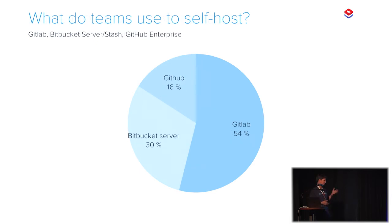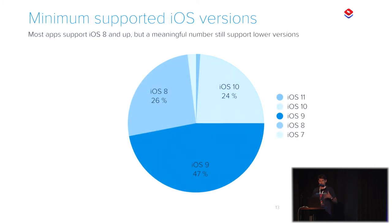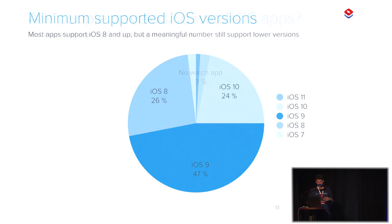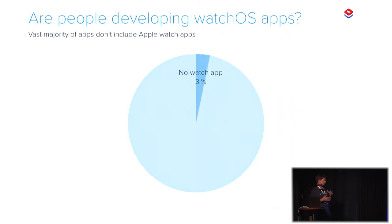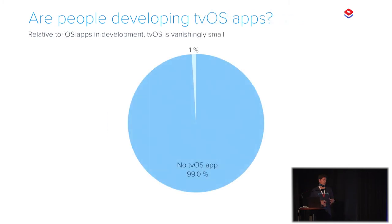Most people are targeting iOS 9. Some people are still supporting iOS 7, so you can imagine how fun that must be. And some people have already decided to go all the way to iOS 11. We didn't see a lot of watchOS applications and we saw even fewer tvOS applications — which I guess means if you want to work on those platforms, there's a big market opportunity.